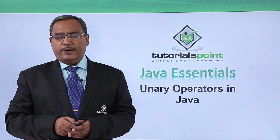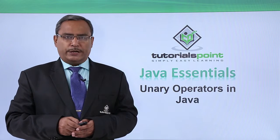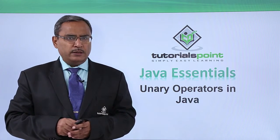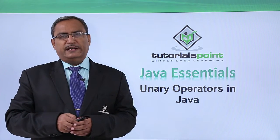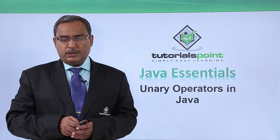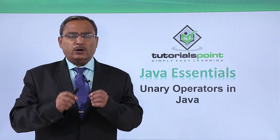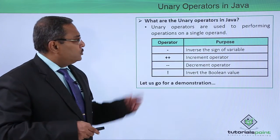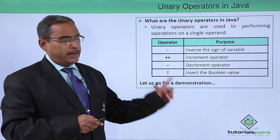In this video, we are discussing unary operators in Java. Whenever one operator deals with only one operand, it is known as a unary operator. If it deals with two operands, it is known as a binary operator. If it deals with three operands, it is known as a ternary operator. Unary operators are used to perform operations on a single operand or variable.